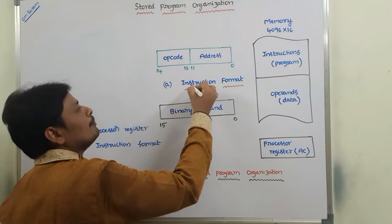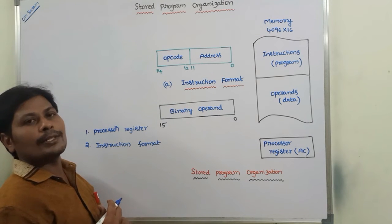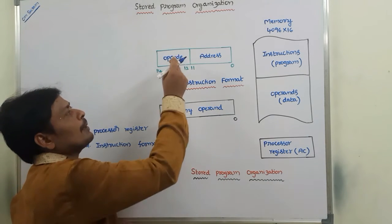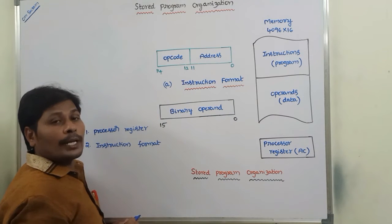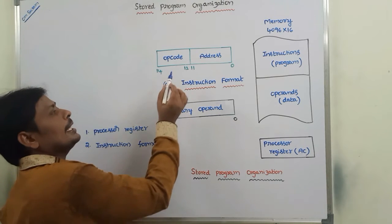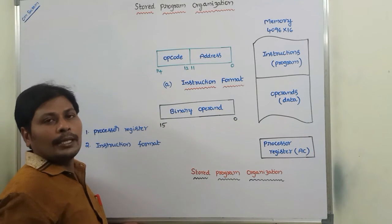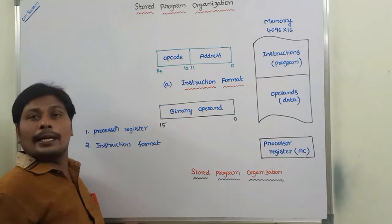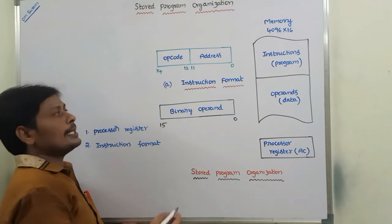This is the 16-bit instruction format. In that 16-bit instruction format, it contains two parts. The first part is called as opcode. Opcode means what is the operation to be performed. It is in the range 12 to 14 bits. The second part is address part. Address part specifies the address of the operands that are stored in memory or a processor register. It contains 12 bits, that is bits 0 to 11.